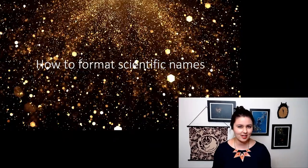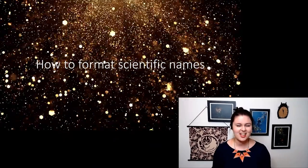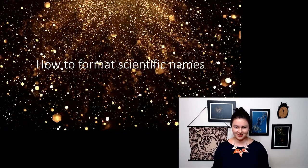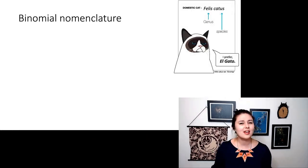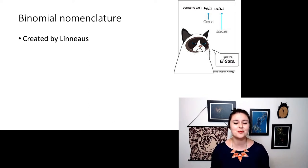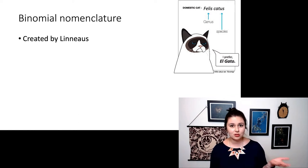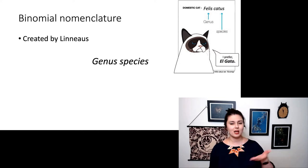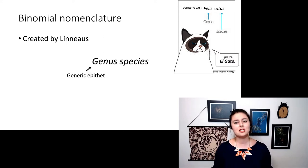Now that we've talked about all of the different primates that are out there, let's talk about how to format their scientific names correctly. This is something near and dear to my heart, but it's also really important within biology. We use something called binomial nomenclature, created in the 1700s by Carolus Linnaeus. 'Bi' means two, 'nomen' means name — so we have two names: a genus name and a species name, called the generic epithet and the specific epithet.